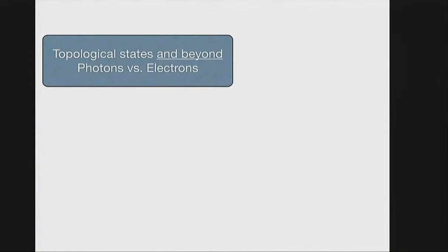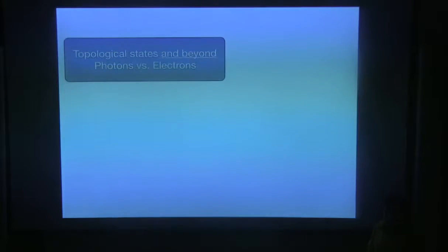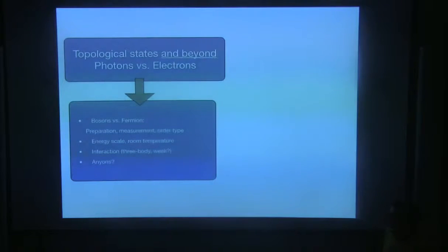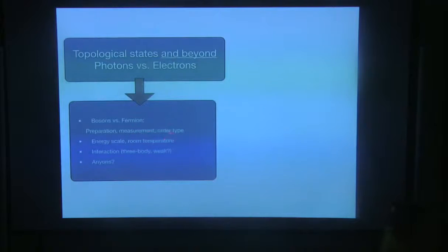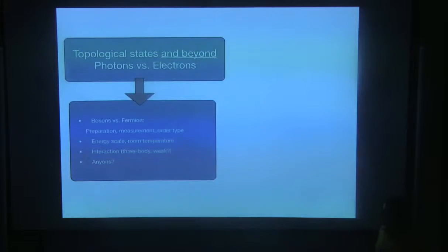The talk will be mostly about topological effects in photonic systems. Topological effects are mostly introduced in electronic systems, and we want to translate some of these phenomena and effects into photonic systems. When we're translating some of these models from electronic to photonic systems, we have to be careful — some of these orders do not actually exist in bosonic systems. Some new physics are expected in photonic systems. In particular, since photons are bosons and electrons are fermions, the types of orders is different. Measurement and preparation of these kinds of states is very different than in electronic systems.